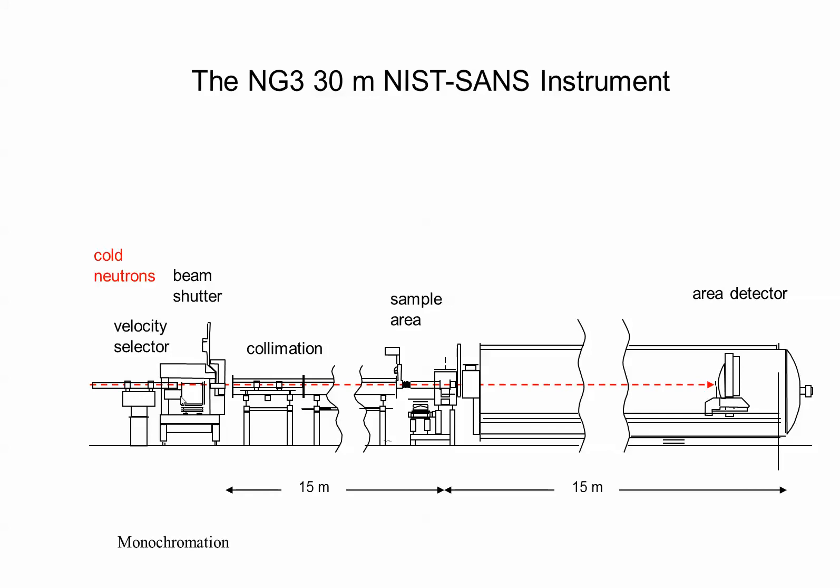30 meter SANS instrument is monochromated using a velocity selector. A lot of white beam coming from the neutron source, you select one wavelength between 5 and 20 angstroms,